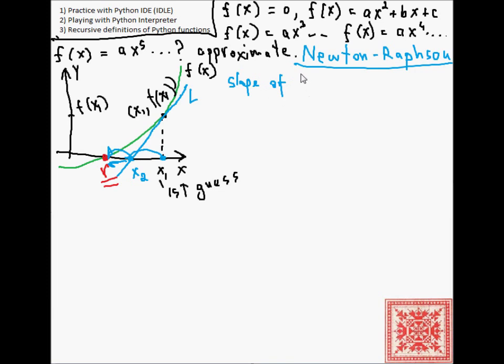So let's try to identify the slope. The slope of L is equal to the derivative of f at x1. That's the slope of L. And then we can use the point-slope formula.